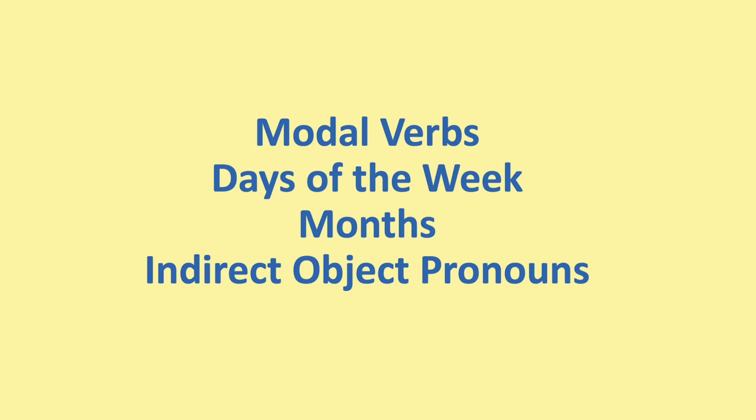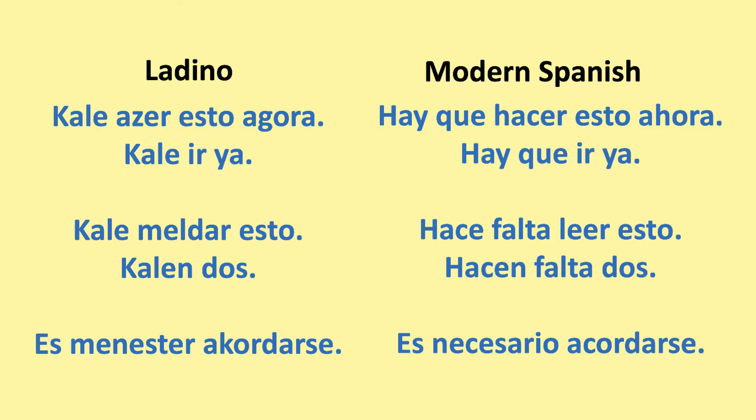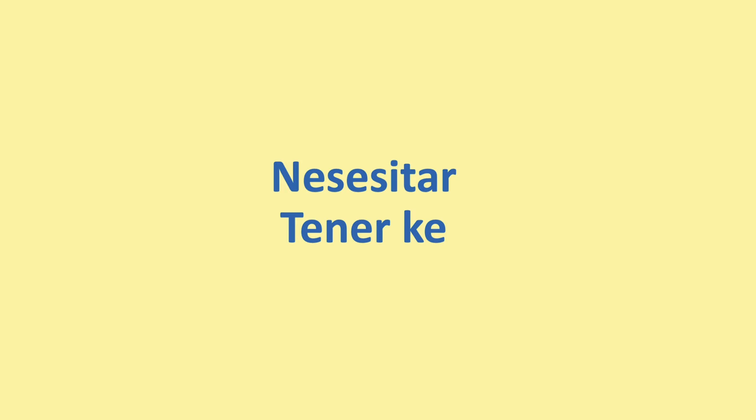In this section I'm going to go over modal verbs, days of the week, months, and indirect object pronouns. To say something is necessary or that you must do something, you use 'cale' and 'ser menester'. For example, Ladino 'cale fazer esto agora' — Spanish 'hay que hacer esto ahora' (we have to do this now). Ladino 'cale ir ya' — Spanish 'hay que ir ya' (we have to go now). 'Cale me dar esto' — Spanish 'hace falta leer esto' (you must read this). 'Cale en dos' — 'hace falta dos' (two are needed). 'Es menester acordarse' — 'es necesario acordarse' (it's necessary to remember). Also: 'necesitar' (to need), 'tener que' (to have to do something).